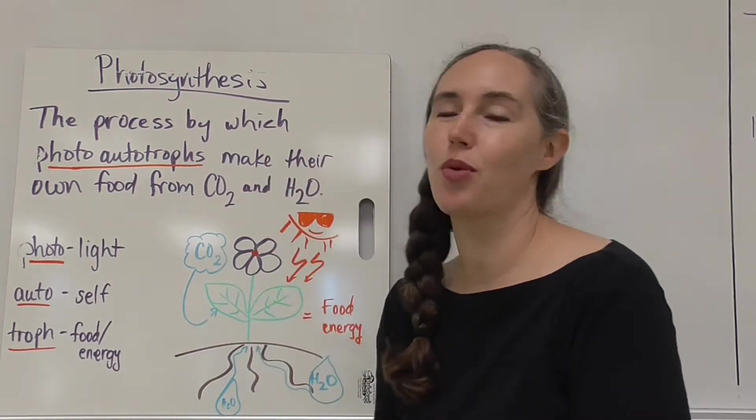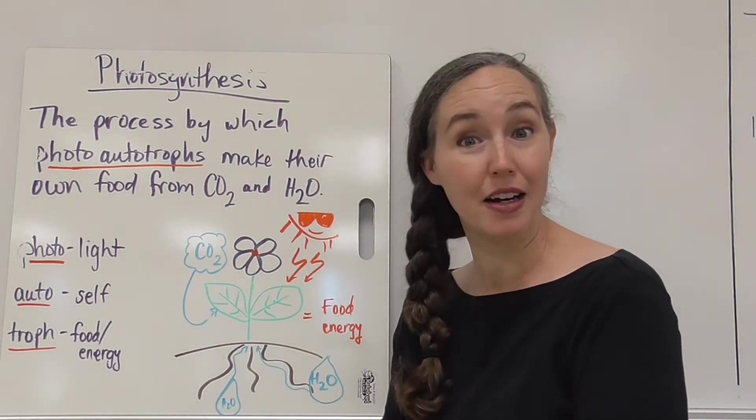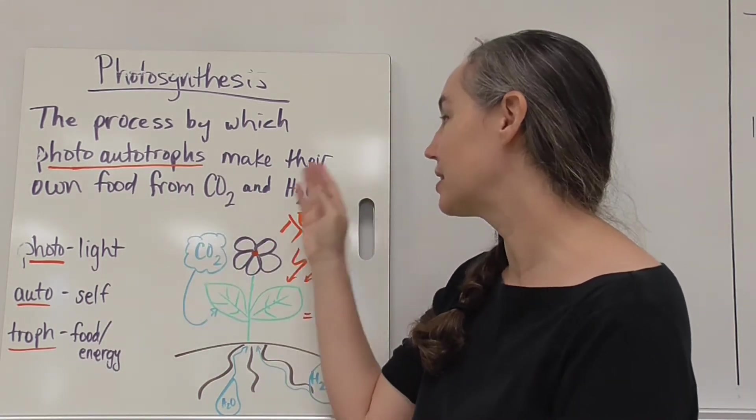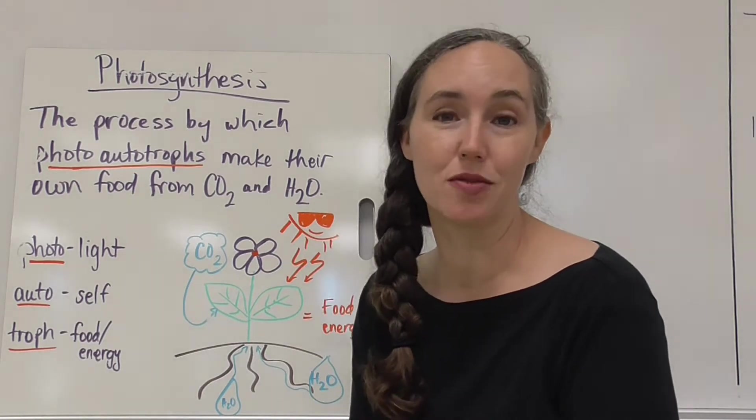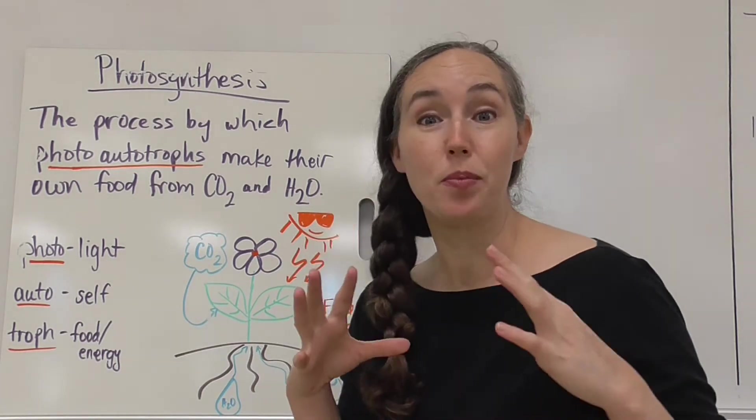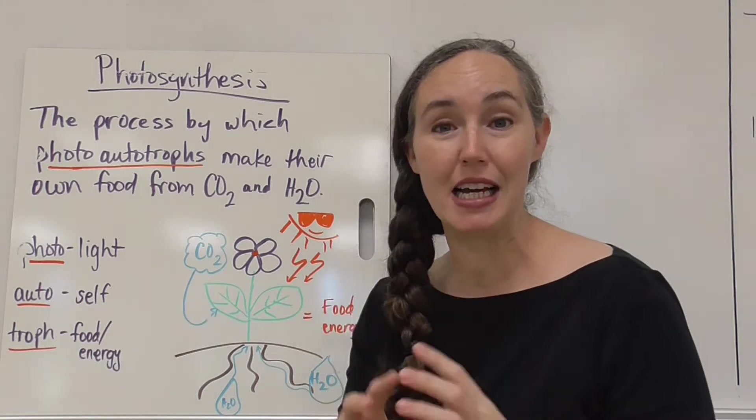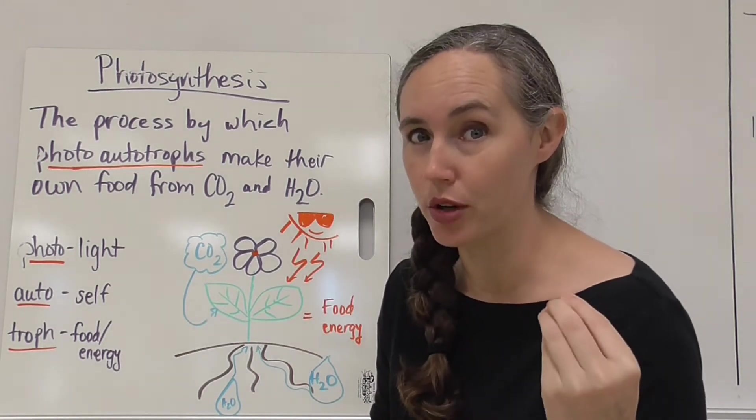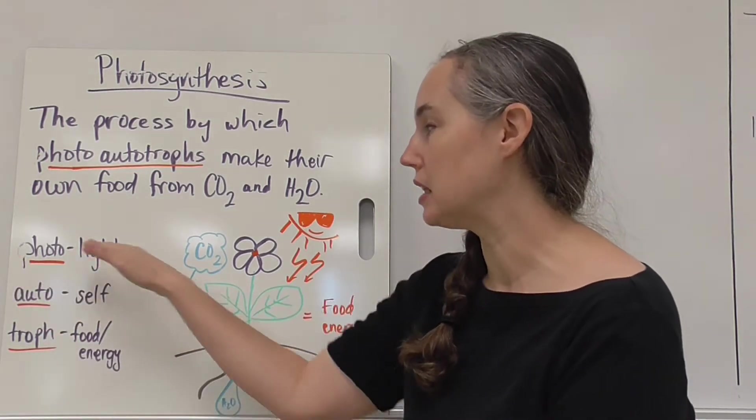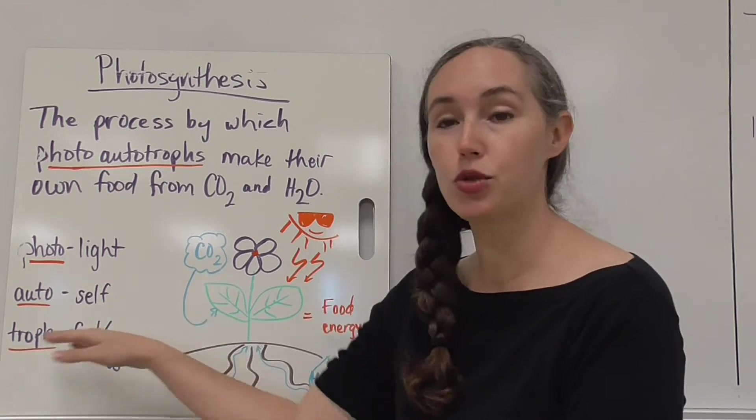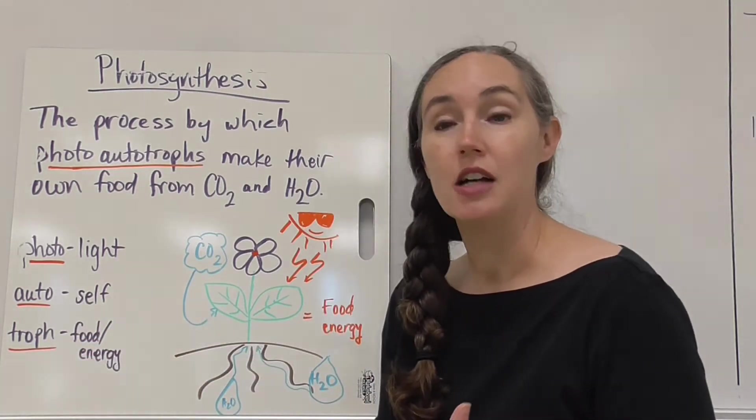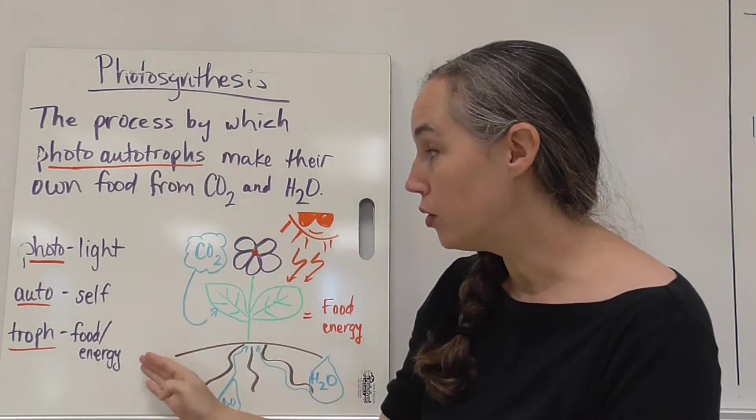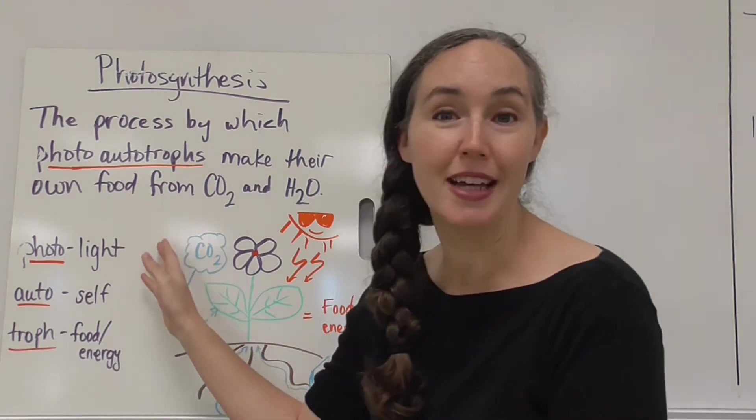Alright, photosynthesis is the process by which photo autotrophs, that's a kind of organism, make their own food from carbon dioxide and water. They're going to do this in the presence of light. Photo autotroph is kind of a big scary word but we can break that down into its component parts. Photo means light, auto means self, and troph means food or source of energy. So a photo autotroph is going to be an organism that makes its own food using energy from light.